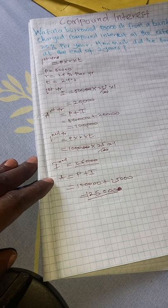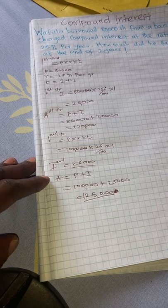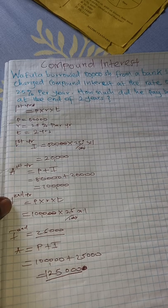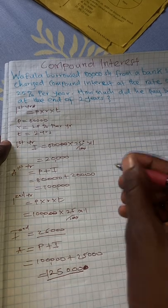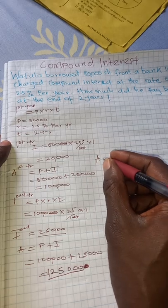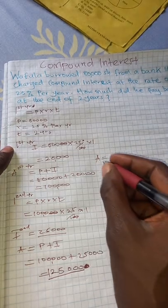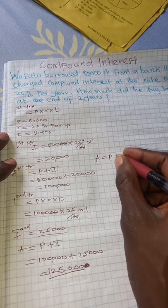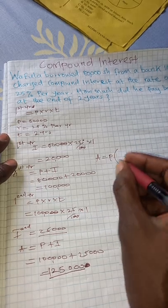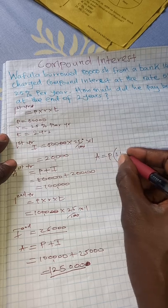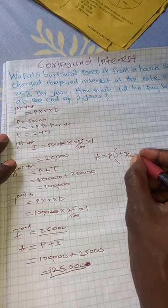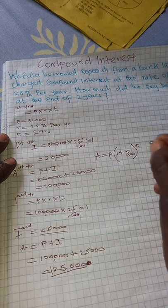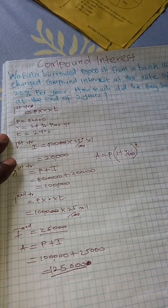That is how we go about calculating compound interest. But we can also use another formula — a shortcut — whereby we calculate the amount using: Amount = Principal times (1 + R/100) raised to the power T, where T stands for time in years.